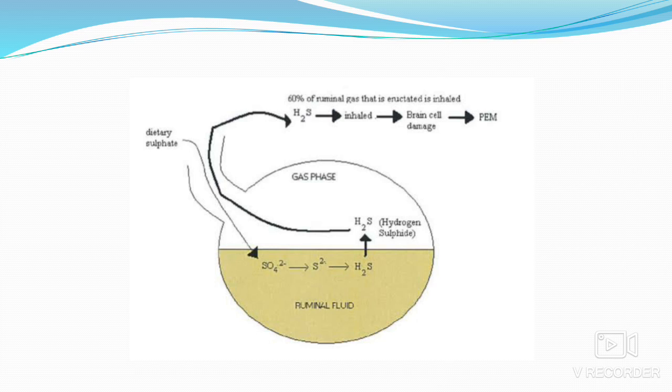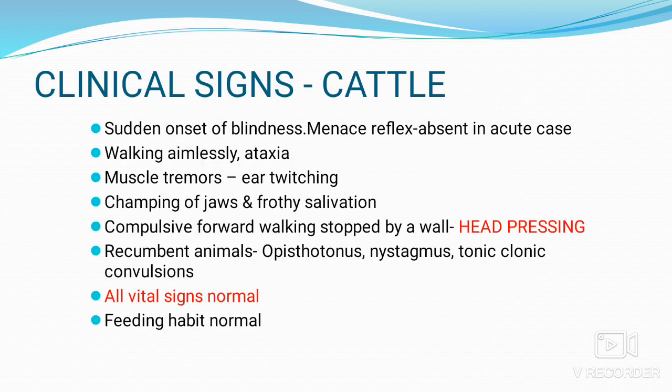Clinical signs in cattle include sudden onset of blindness with absent menace reflexes in acute cases, aimless walking, muscle tremors, champing of jaws, and frothy salivation. Head pressing is present — this is compulsive forward walking stopped by a wall. In ruminants we can observe opisthotonus, nystagmus, tonic-clonic convulsions, and all vital signs remain normal. Feeding habit and defecation are also normal.